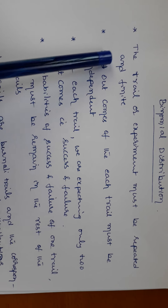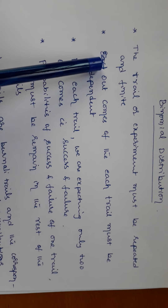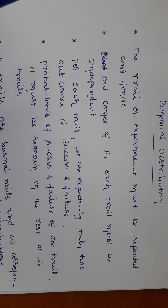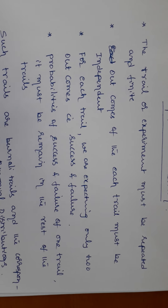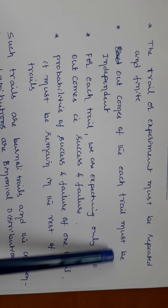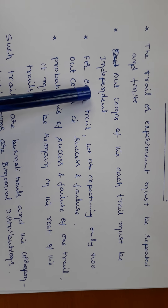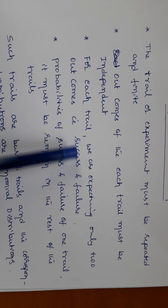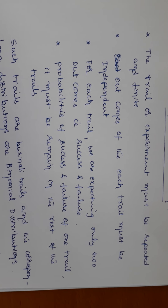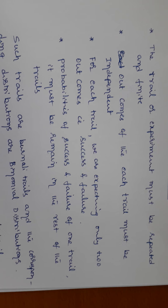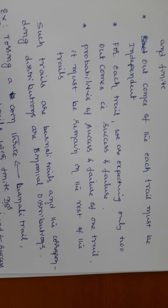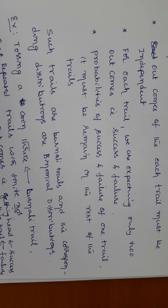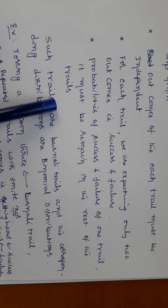If you want to use binomial distribution, the following conditions must be satisfied. Condition one: the trial or experiment must be repeated and finite — the trial must be countable. Condition two: the outcomes of each trial must be independent. Condition three: for each trial we are expecting only two outcomes — one is success, another is failure. You cannot expect more than two outcomes in any trial.